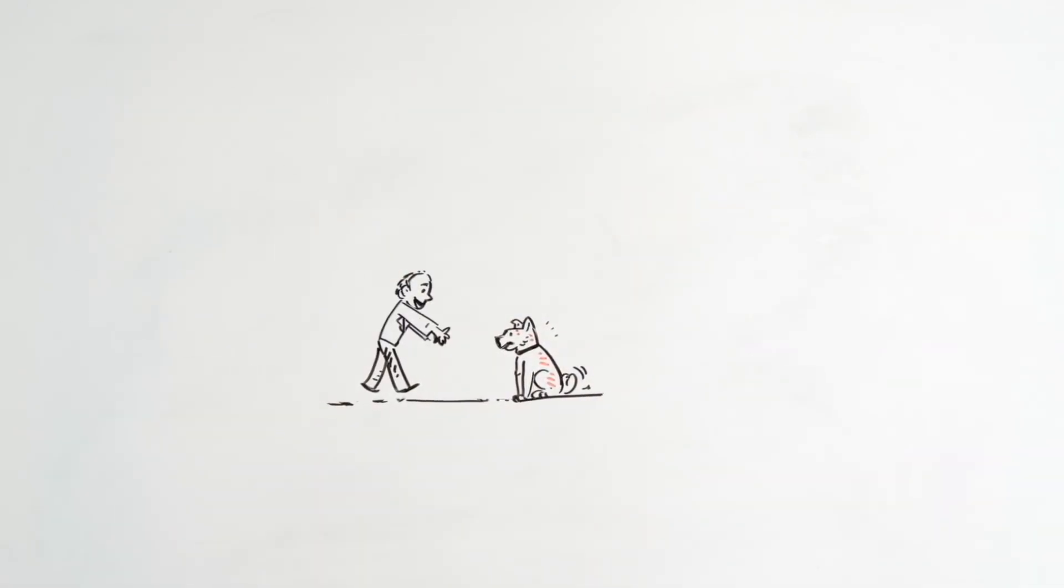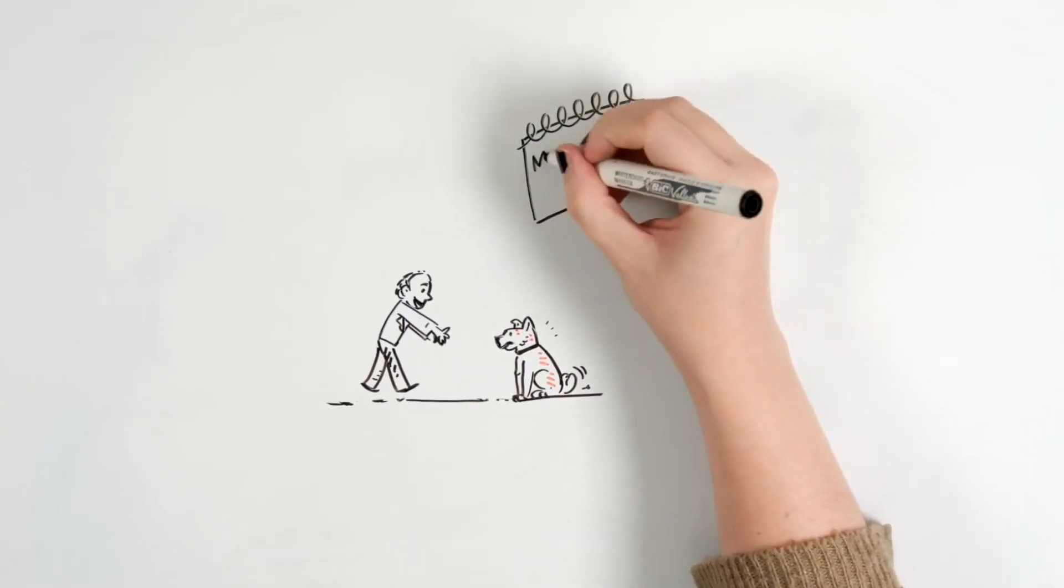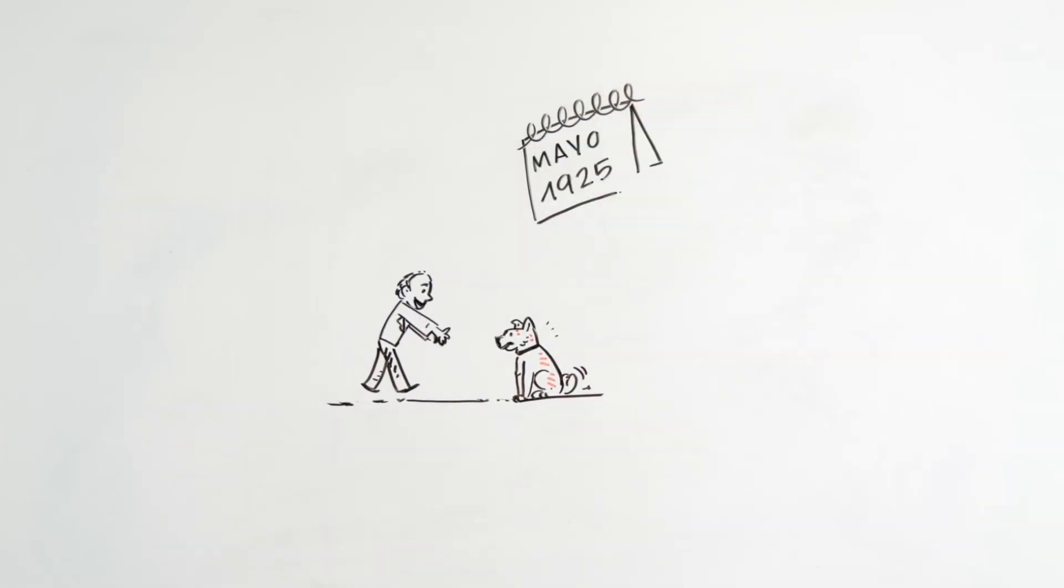This routine continued without interruptions until May 21st, 1925, when the professor died of a brain hemorrhage while teaching at the University of Tokyo. That afternoon, Hachiko went to the station to wait for his owner's arrival, but he never arrived.